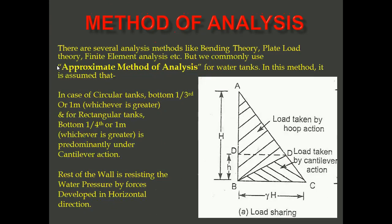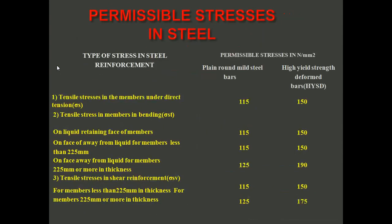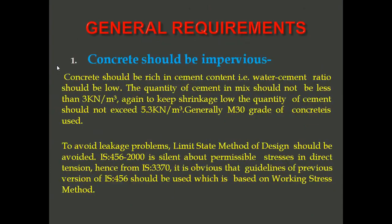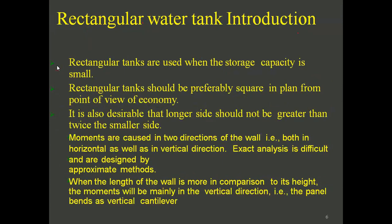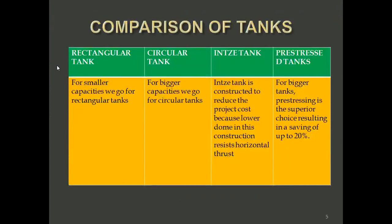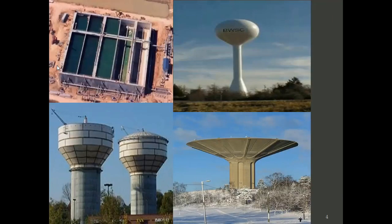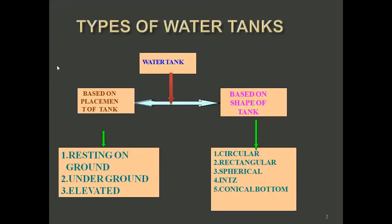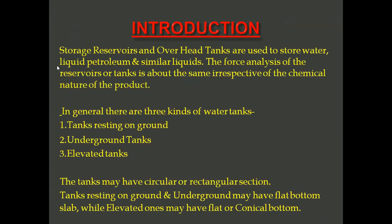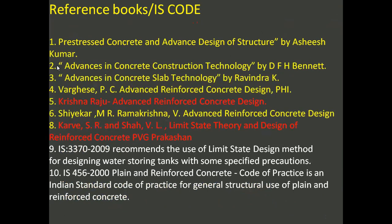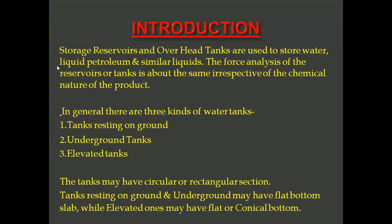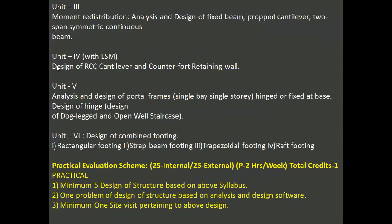To summarize, water tanks are classified based on their placement — above ground, underground, and elevated — and based on their shape, that is rectangular, circular, spherical ends, and conical bottom. You must have the reference books mentioned and also a copy of the IS code. Thank you very much.